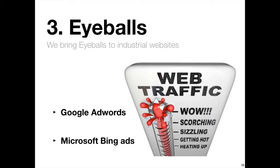Lastly, number three: web traffic. After making the website findable and sticky, we set up a digital advertising program called pay-per-click. Digital advertising brings qualified buyers — buyers with an immediate need — to your website. Pay-per-click advertising is accountable down to the individual click. It is the lowest cost way to find people that are trying to find you. Pay-per-click advertising is the tool that increased Dearborn's sales inquiries from 50 per month to 400 per month.